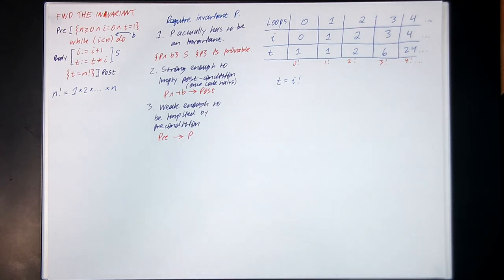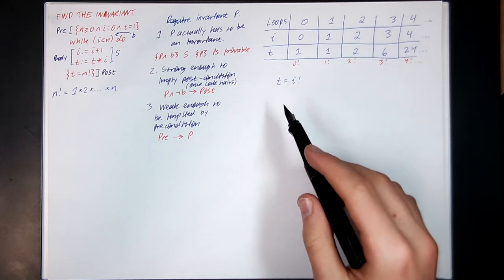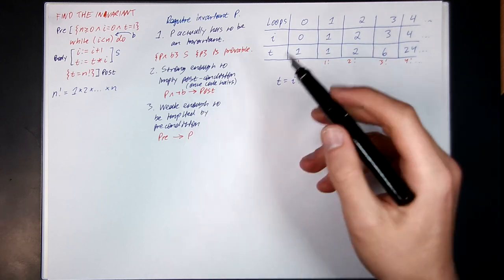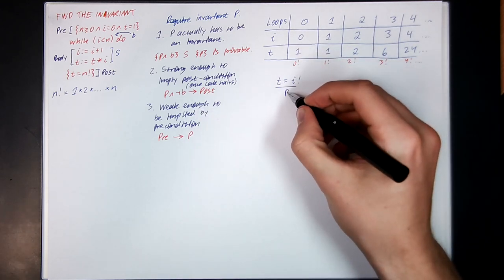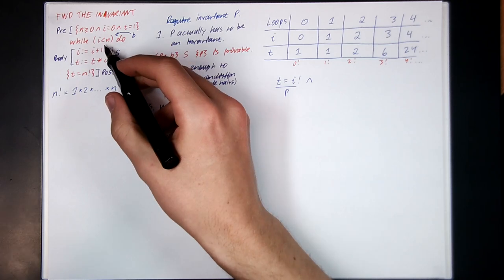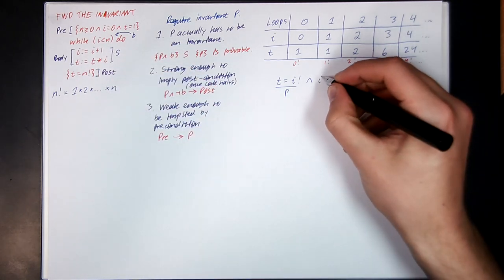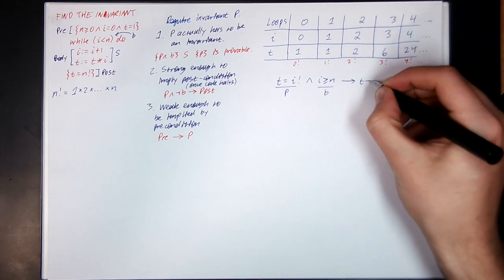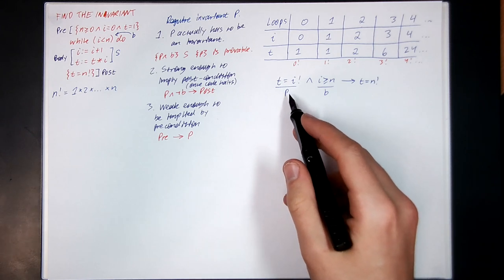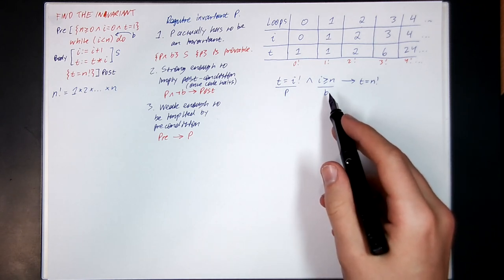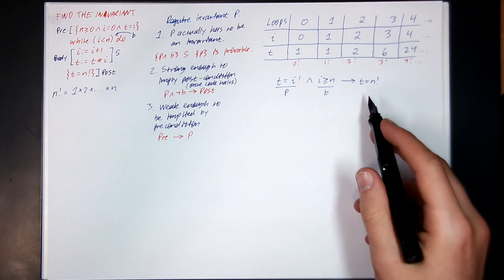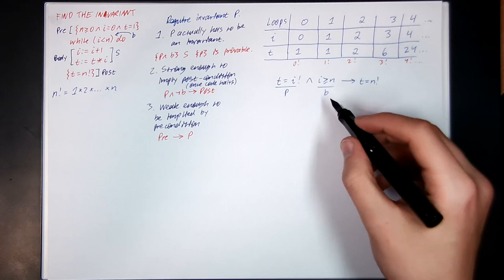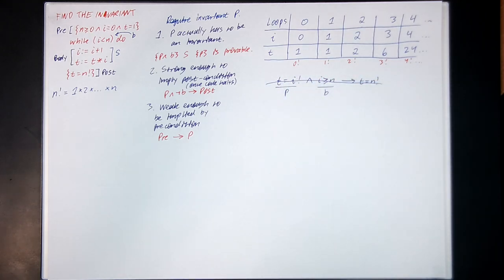First, we'll look at rule 2: is this strong enough to imply the postcondition? If P is t equals i factorial and not B is i greater than or equal to n, will this imply t equals n factorial? Well, if t equals i factorial and i is bigger than or equal to n, it might not be the case that t is n factorial because i could be really, really big. So this won't work alone — our postcondition is too weak; we need something stronger.